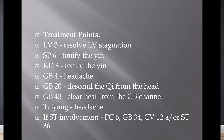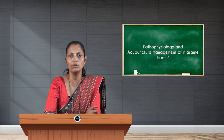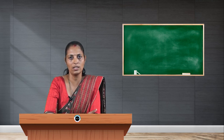Treatment options for liver yang rising: Liver 3 — the yuan source point of the liver meridian, located 2 cun proximal to the web space of the first and second toes — helps in resolving liver stagnation. Spleen 6 helps to tonify the yin of the spleen. Kidney 3 tonifies the yin. GB 4 is helpful for headache. GB 20 helps to descend chi from the head. GB 43 clears heat from the gallbladder channel. Tai Yang helps reduce pain in the head region. If the stomach is involved, Pericardium 6, GB 34, CV 12, and ST 36 may also be used. The other three factors will be continued in the next session.